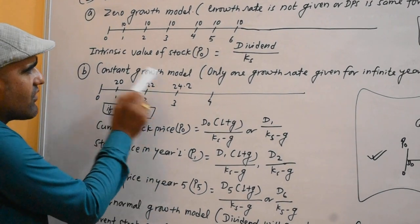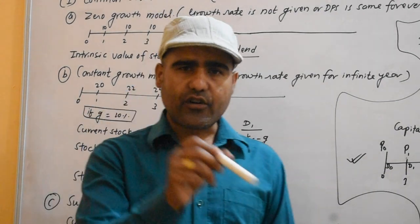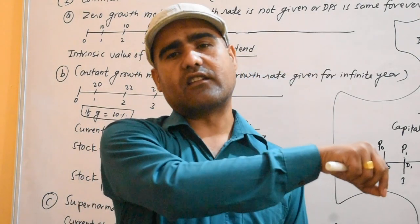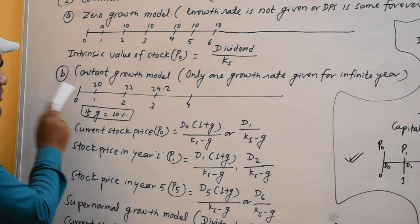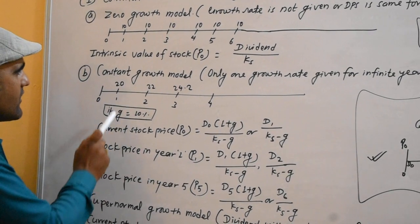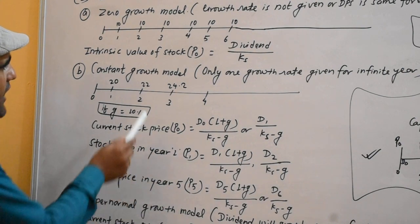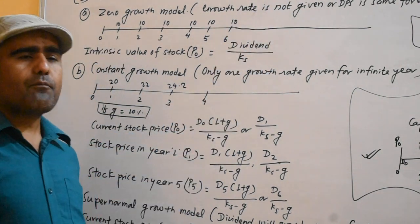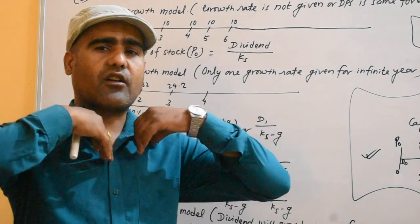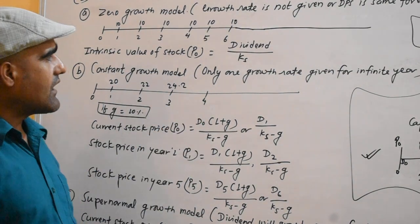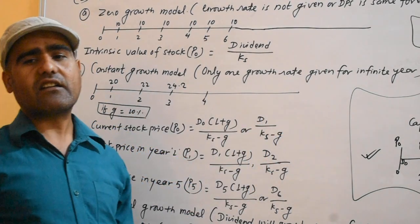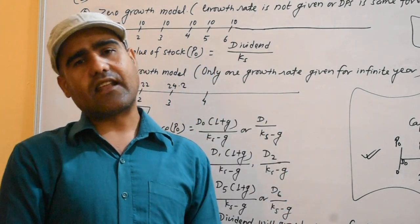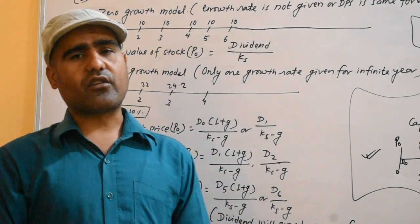Second, you have the constant growth model. A constant growth model means every year you have a growth rate applied to the dividend. For example, if your dividend is $50 per year, you would allow a 10% increase over a period of years. Only one growth rate is given for a finite or infinite number of years. You will increase by that one growth rate in the dividend.